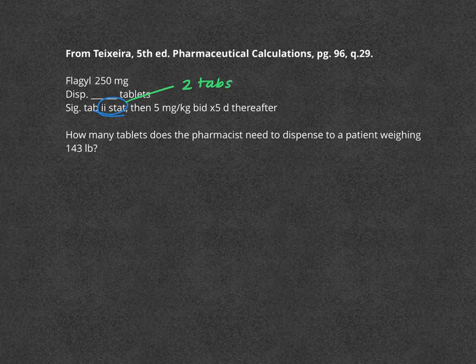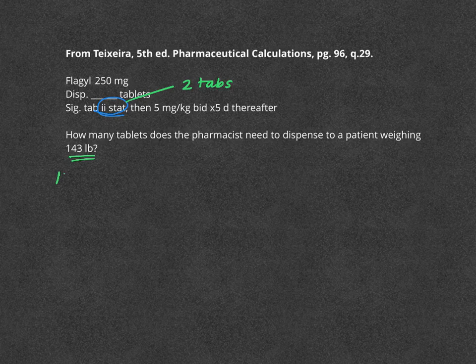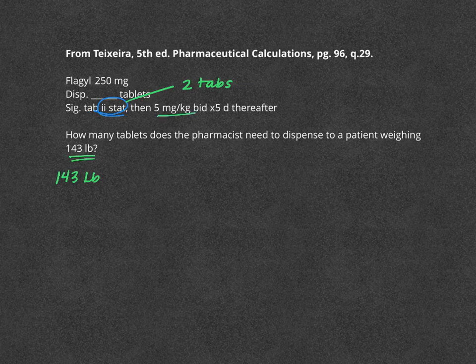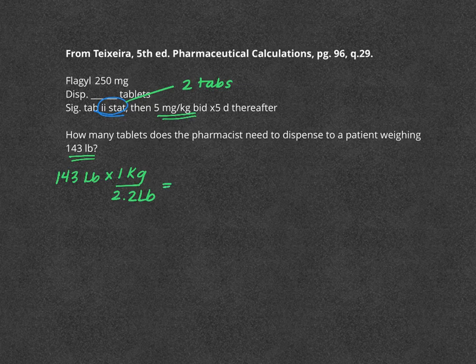The remainder of the problem can pretty much be simply calculated by a series of dimensional analyses. So let's start with the patient's weight. We often start there in calculations. So we need to convert pounds to kilograms because that's what we are given here. So 143 pounds times one kilogram per every 2.2 pounds equals 65 kilograms.